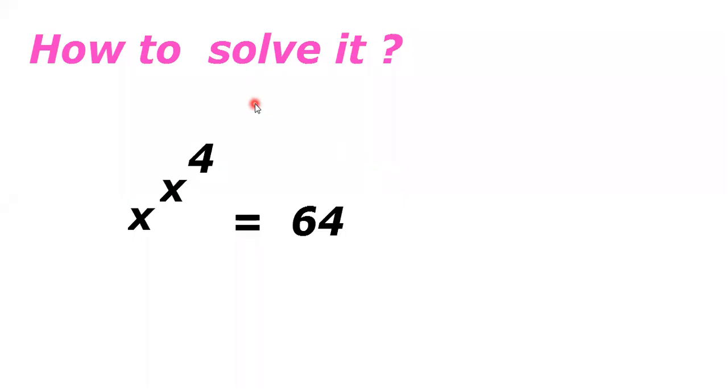Hi friends, how to solve this question: x power x power 4 is equal to 64? So here x power x power 4, if we do whole power 4 on both sides, we can get an easy method.